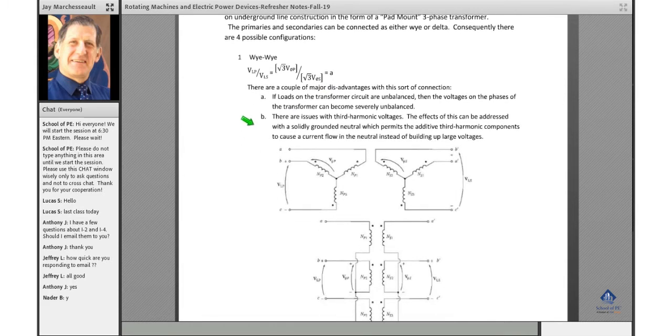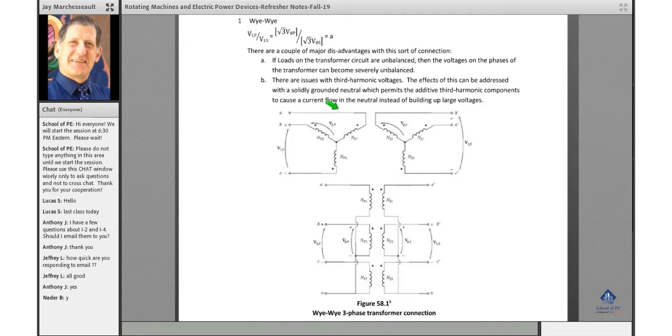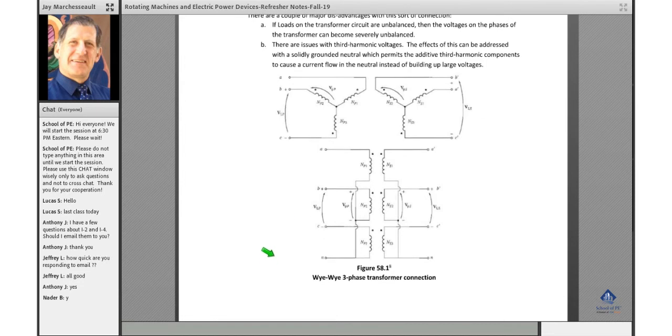There's a couple of disadvantages. First, if the loads on the transformer circuits are unbalanced, then the voltage on the phases of the transformer can be severely unbalanced. You have third harmonics issues here. You can have a solidly grounded neutral, which a lot of utilities do, and that permits the additive third harmonics to flow in that neutral line. But then that can cause high current flows in the neutral, and sometimes you can get a ground fault relay to pick up if it gets high enough. So that is a concern.